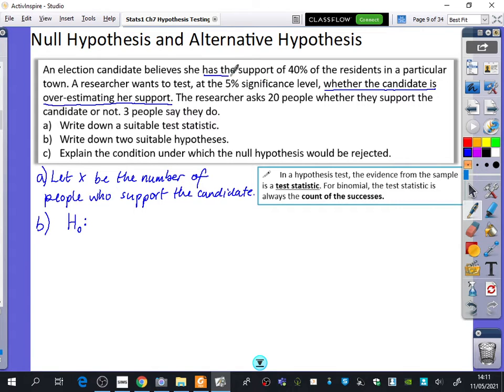0.4. Yeah, she says I've got the support of 40% of the residents. So if that's true, that's what we're assuming to be true. She has got 40% of the support. So H0: P = 0.4.